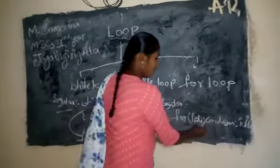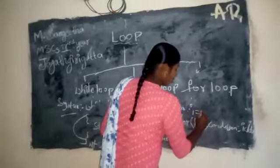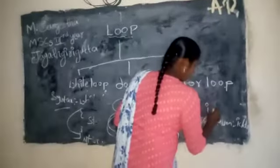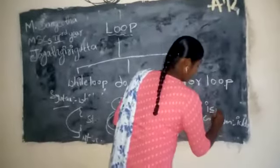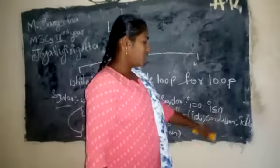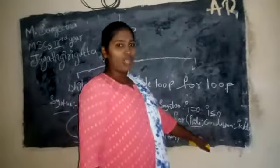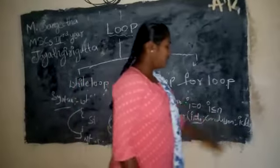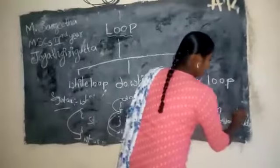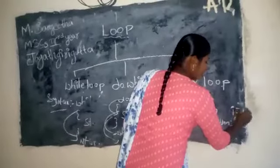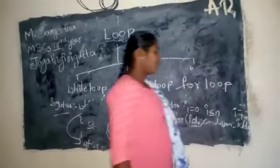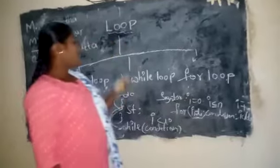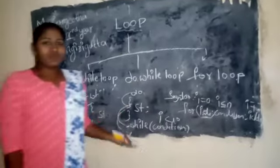If we initialize some value — i is equal to 0 — then the condition: i less than or equal to n. If the condition is true, it will go to the loop and print the statement. Next, it increases or decreases the value. This is called a for loop. This is the concept of the for loop. Thank you.